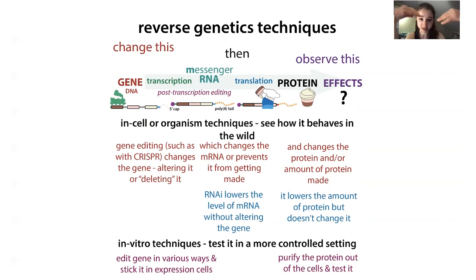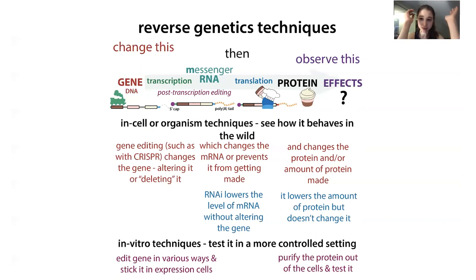With CRISPR, if you actually change the gene, you can see the effect of specific sequence changes. There are also techniques where you knock out the original gene and then supplement with different versions — so you have cells that don't make the protein, and then you add back different versions to see whether they can compensate. That's another common approach.